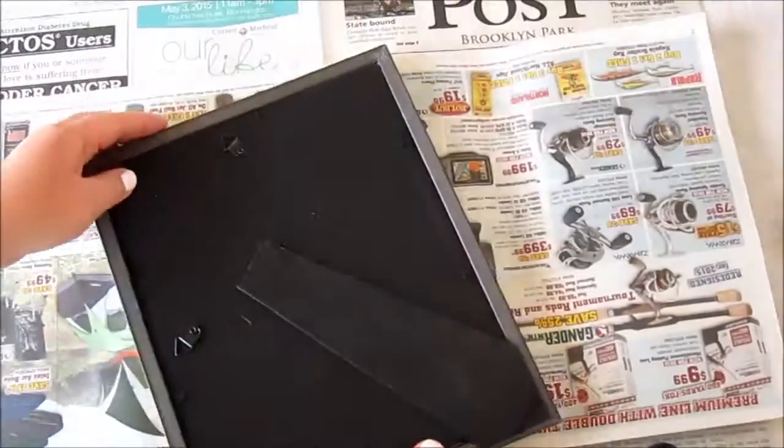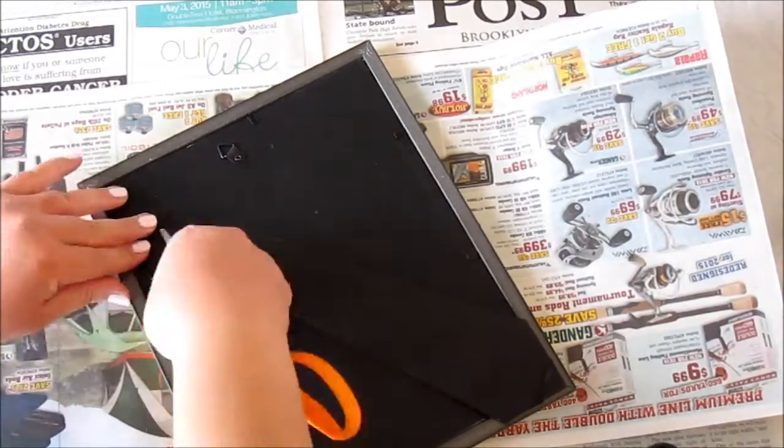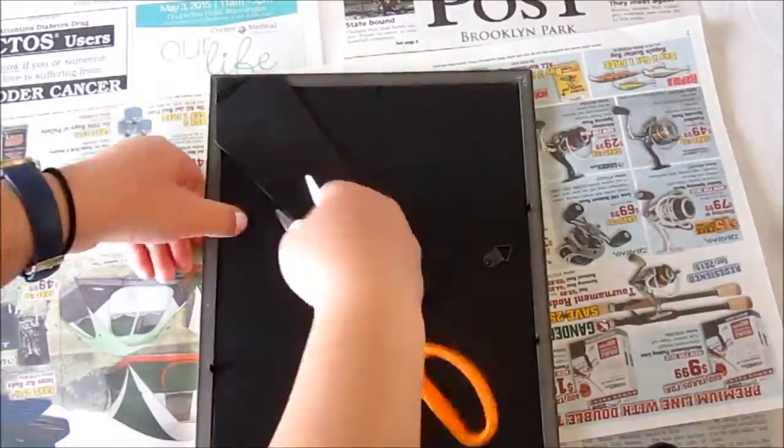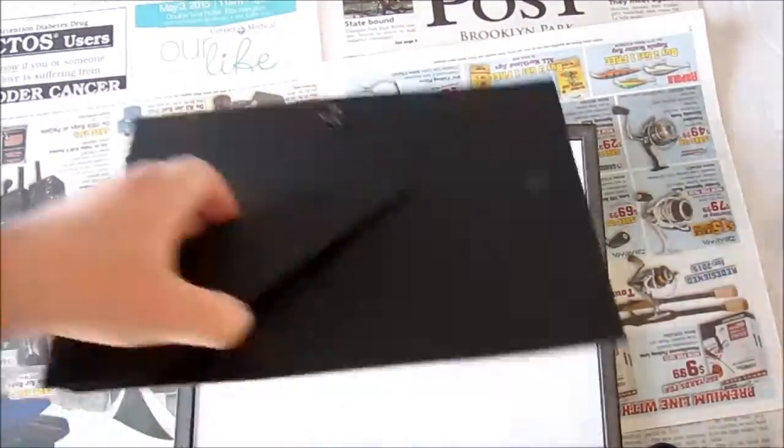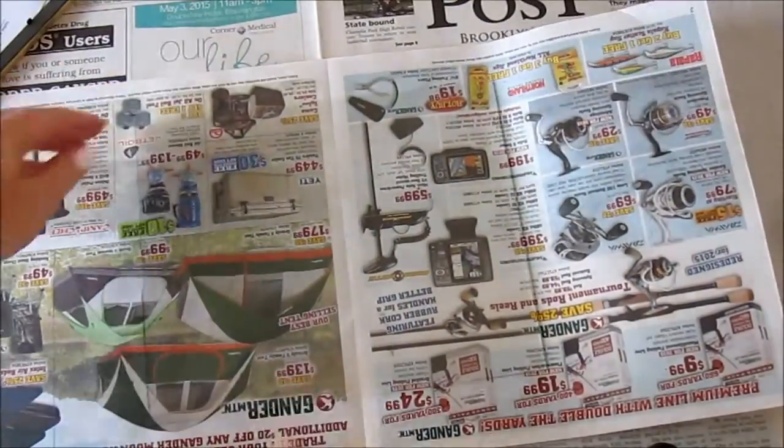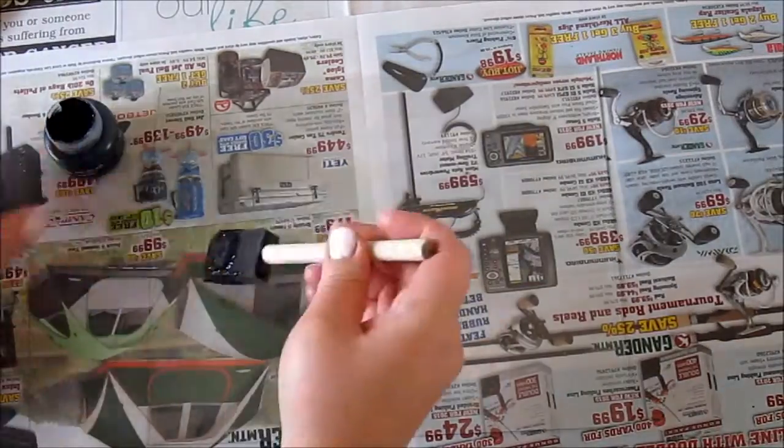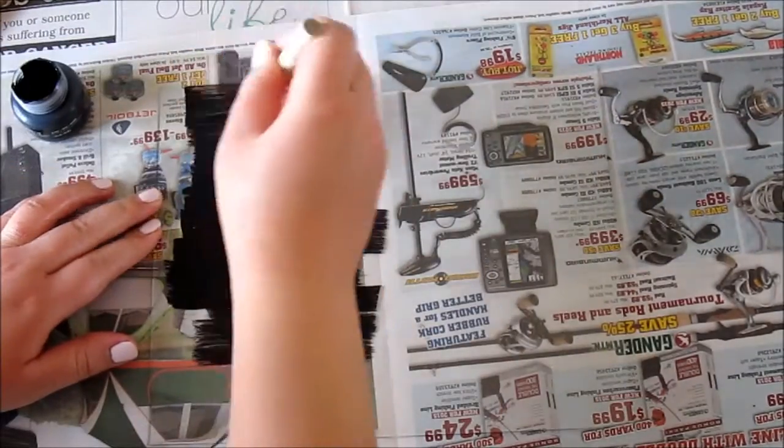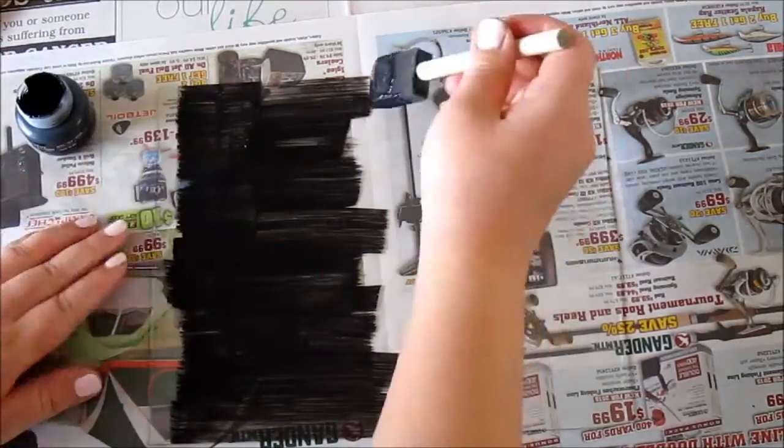The second project here we're going to start with a picture frame and go ahead and take out the glass. We are going to repeat the same steps. Add the first layer of chalk paint and let it dry for 15 to 20 minutes.